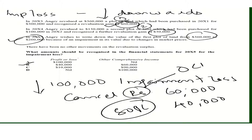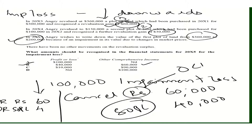So SOPL is 40,000 and other comprehensive income is 60,000 — the answer is Option B. The journal entry is: Debit Revaluation Surplus 60,000 (cancelling the surplus), Debit SOPL 40,000 (impairment loss), and Credit Land 100,000, since you are bringing down the value of land by 100,000.